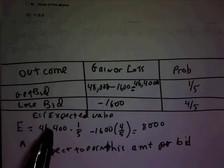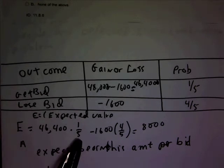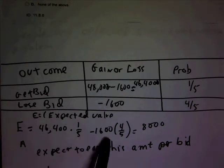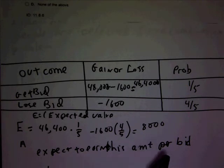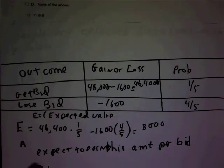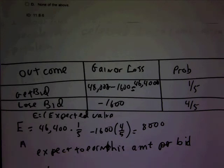They have the outcome and the probability for each case. The expected value in this case is $8,000. What that means is that they can expect to earn this amount when they bid.